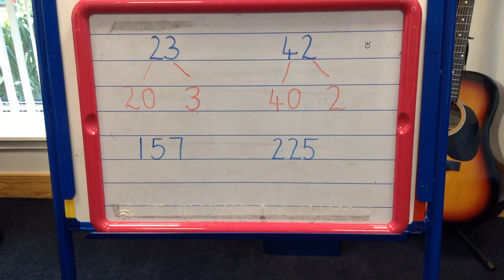Take the number 157. If we partition this number, it becomes 100, 5 tens and 7 ones.